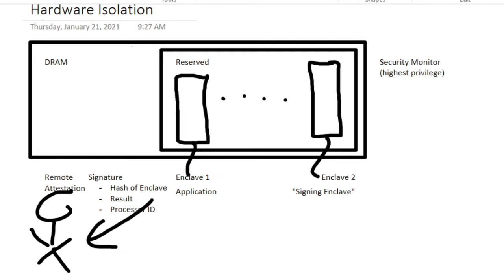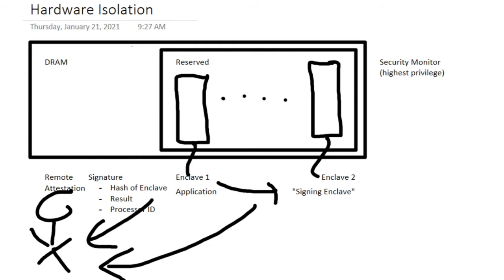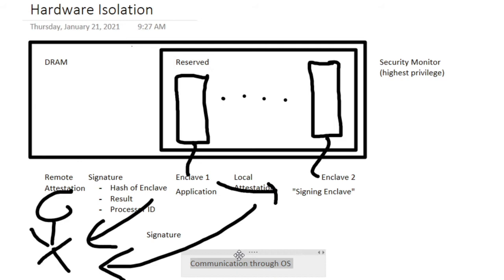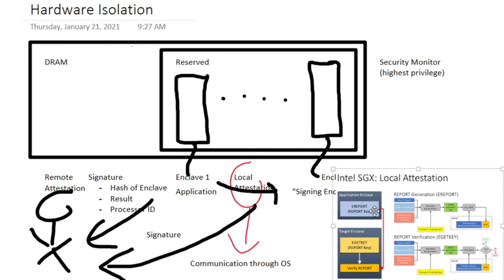This in turn creates a new problem, because the result is going to be communicated from the application enclave to the signing enclave, which then signs it on behalf of the application enclave. What is needed between the application enclave and signing enclave is called local attestation. The signing enclave needs to be sure that the result comes from the application enclave. However, the communication from the application enclave to the signing enclave is done through the operating system, which is untrusted. So what is needed is a secure communication channel, and in order to establish this we need crypto — leading to a complex system. Here in this picture we see Intel SGX's solution: a complex protocol that uses AES and MAC.